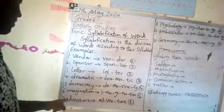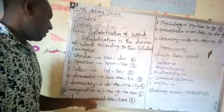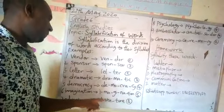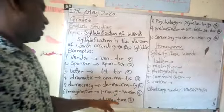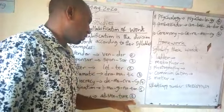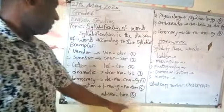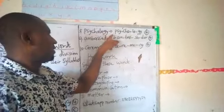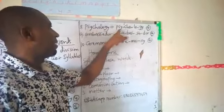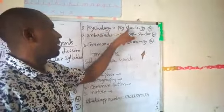Number seven: adventure. Adventure — it has three syllables, so we also call it a polysyllabic word. Number eight: psychology. Psychology — it has four syllables, so we call it a polysyllabic word.